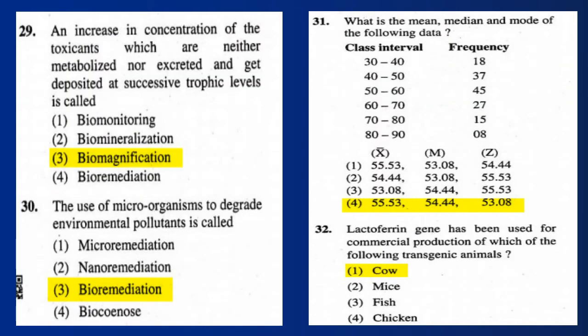Question 29: An increase in concentration of toxicants which are neither metabolized nor excreted, and which get deposited at successive trophic levels, is called biomagnification. Question 30: The use of microorganisms to degrade environmental pollutants is called bioremediation.